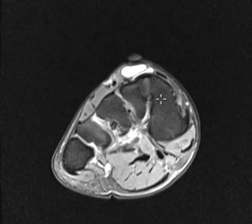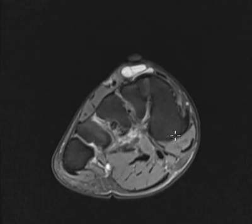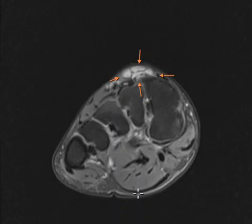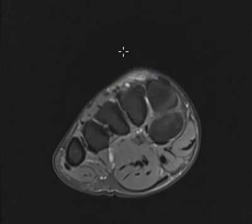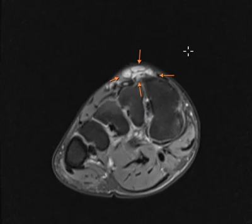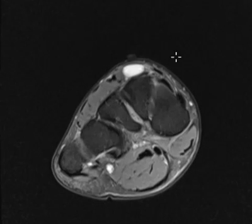Now we can see this on other views. You have three different planes we look at. This is called the axial plane. This is the outside, this is the inside — the medial side. This is the plantar side — the bottom. This is that dorsal foot. You can see these little internal septations there, and then back here there's a more clean collection.